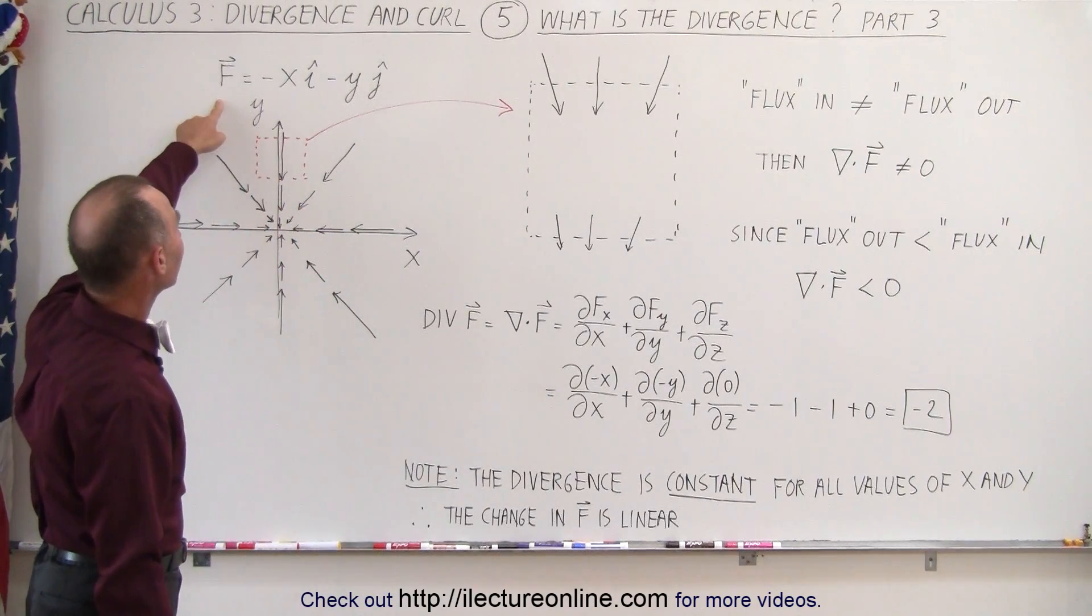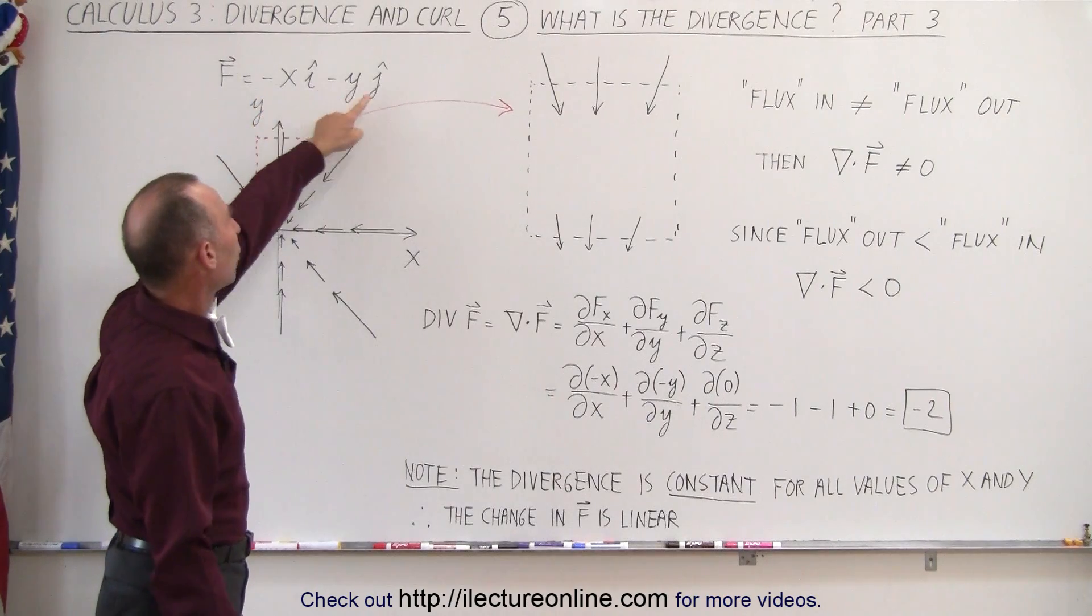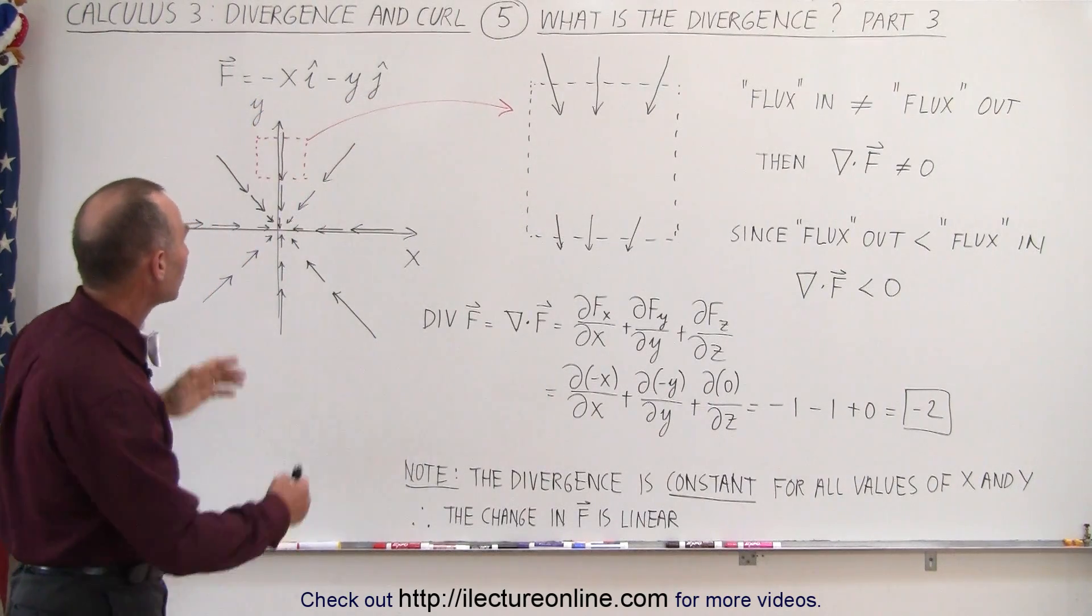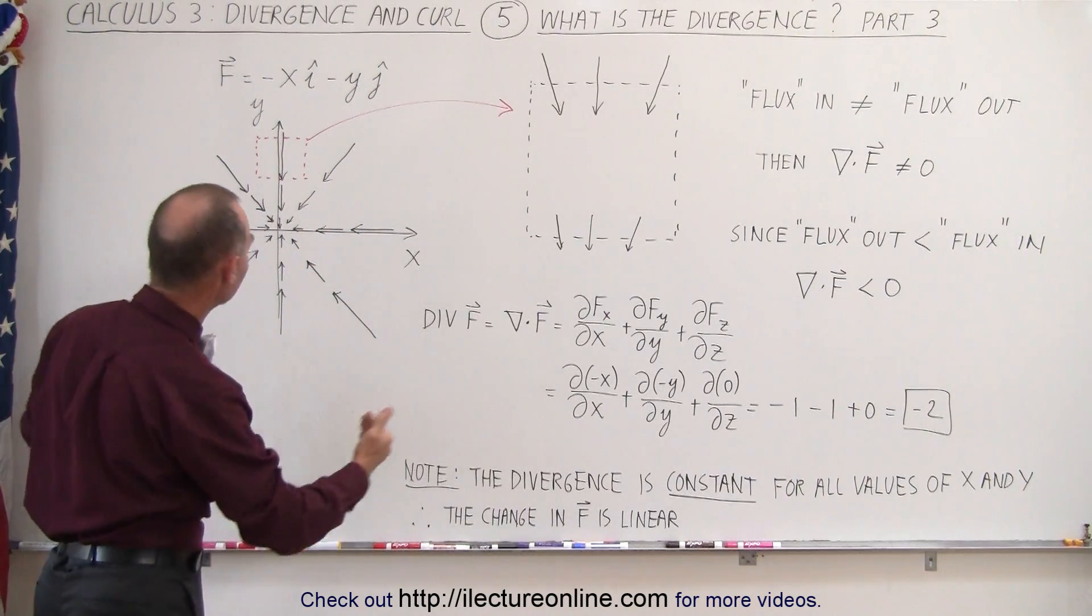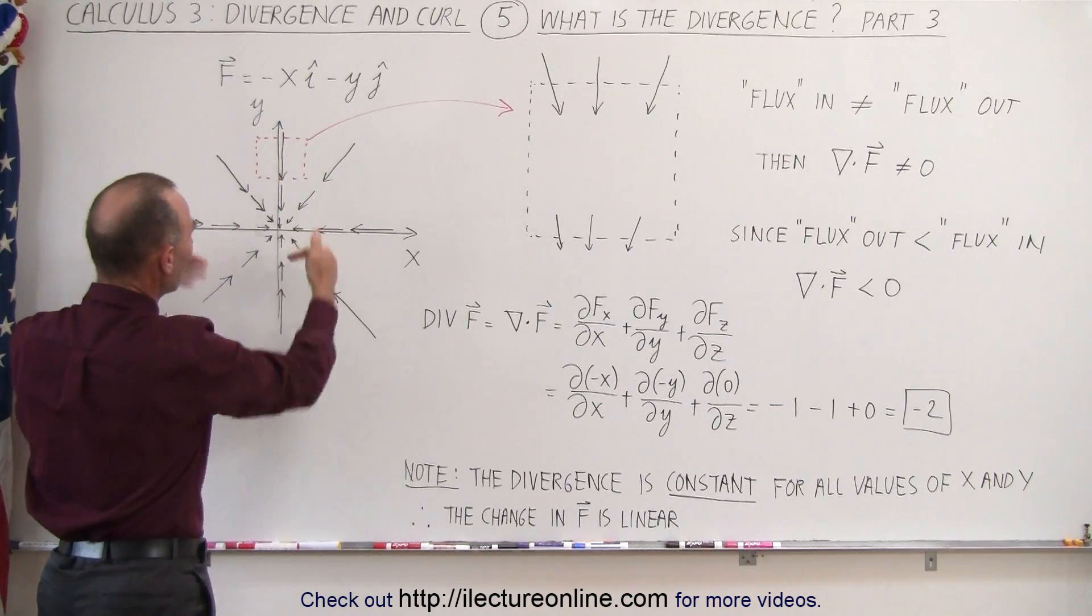In this case, we have a vector field that has both an x and a y component. Now, when you draw this vector field, you can see that the magnitude of the vector field is always towards the origin from all directions.